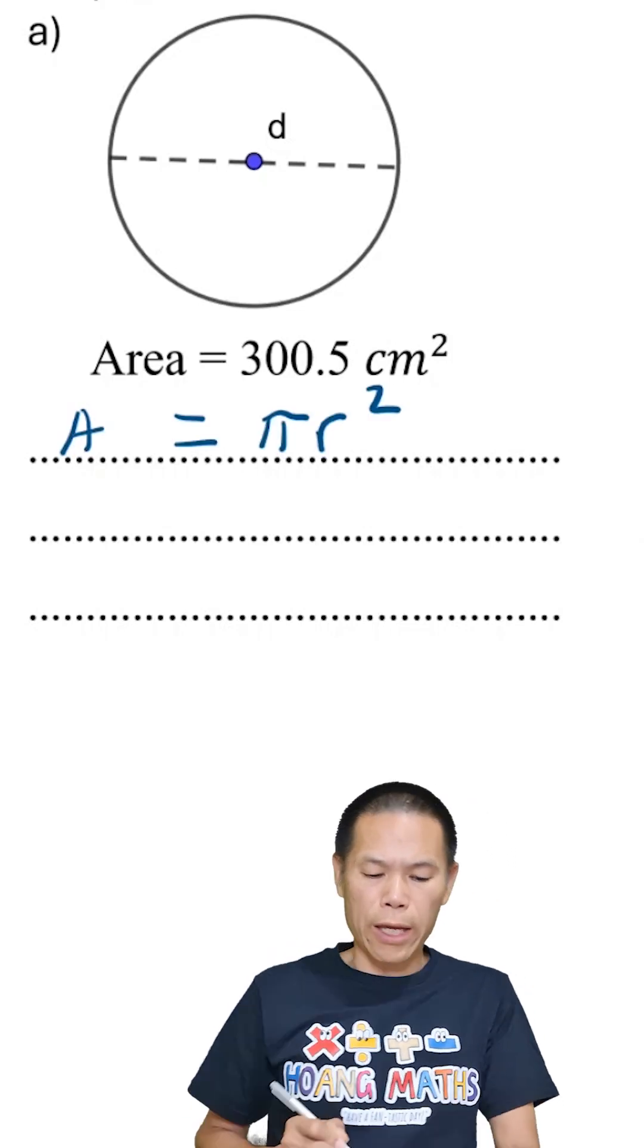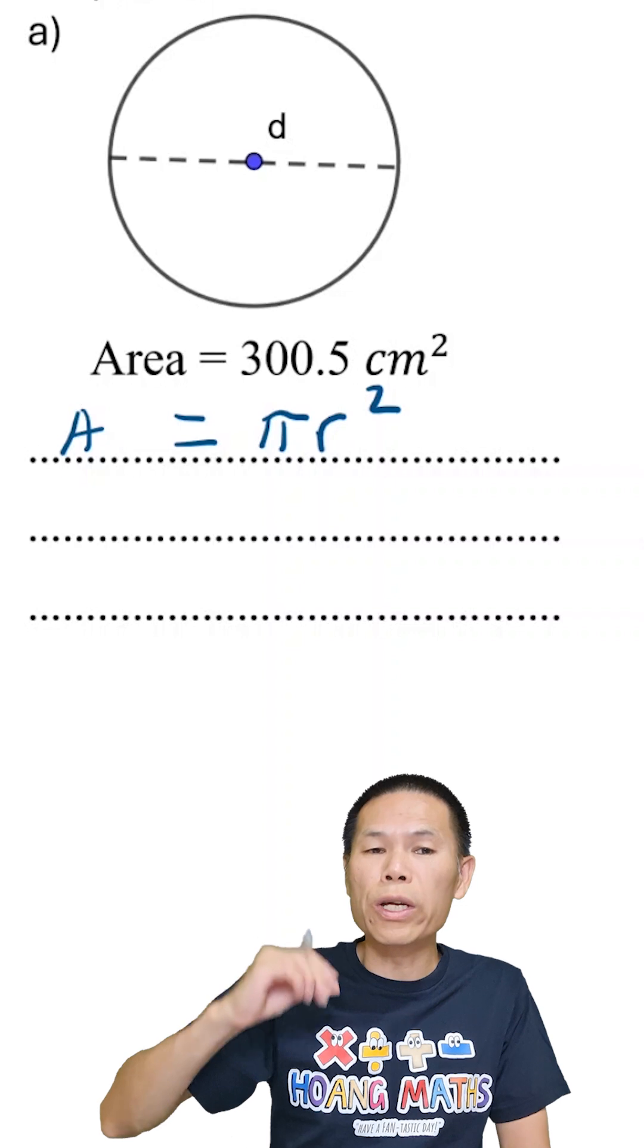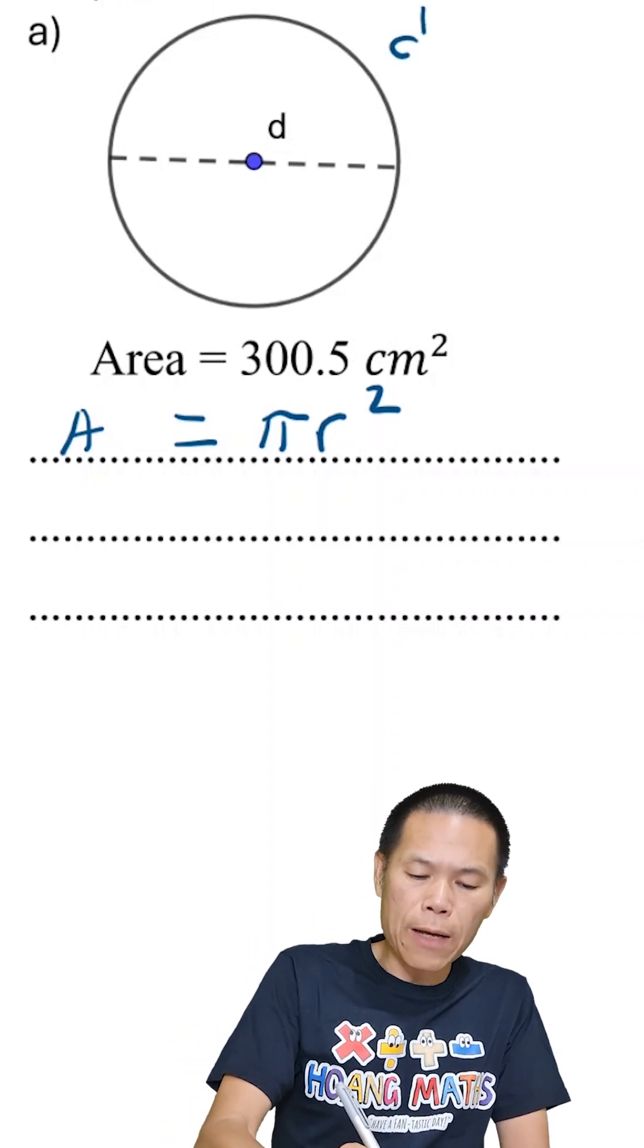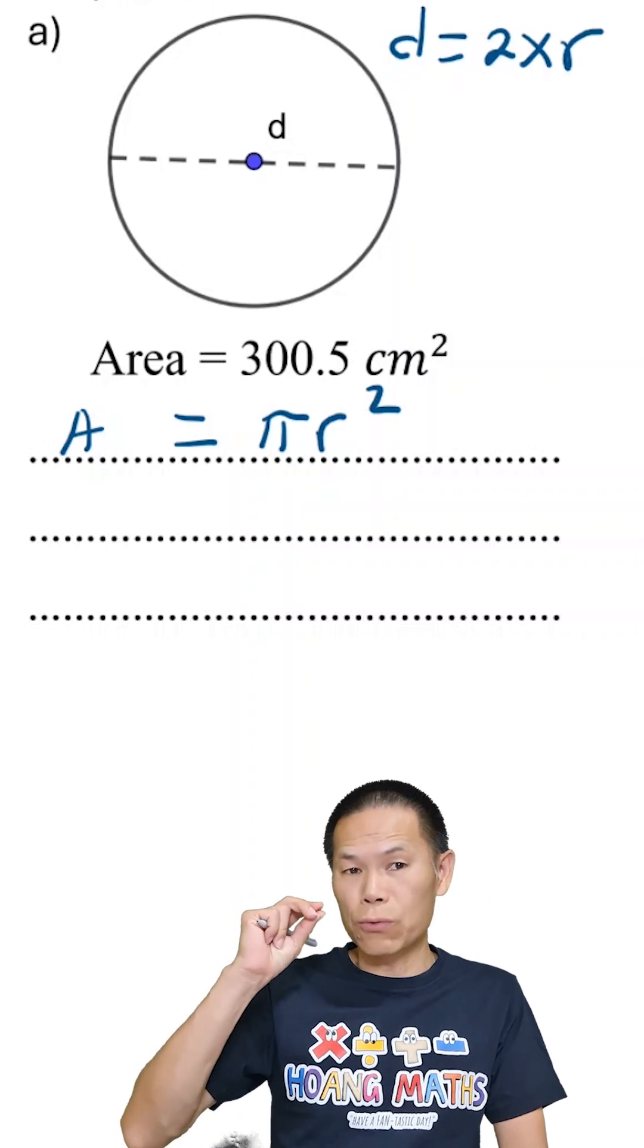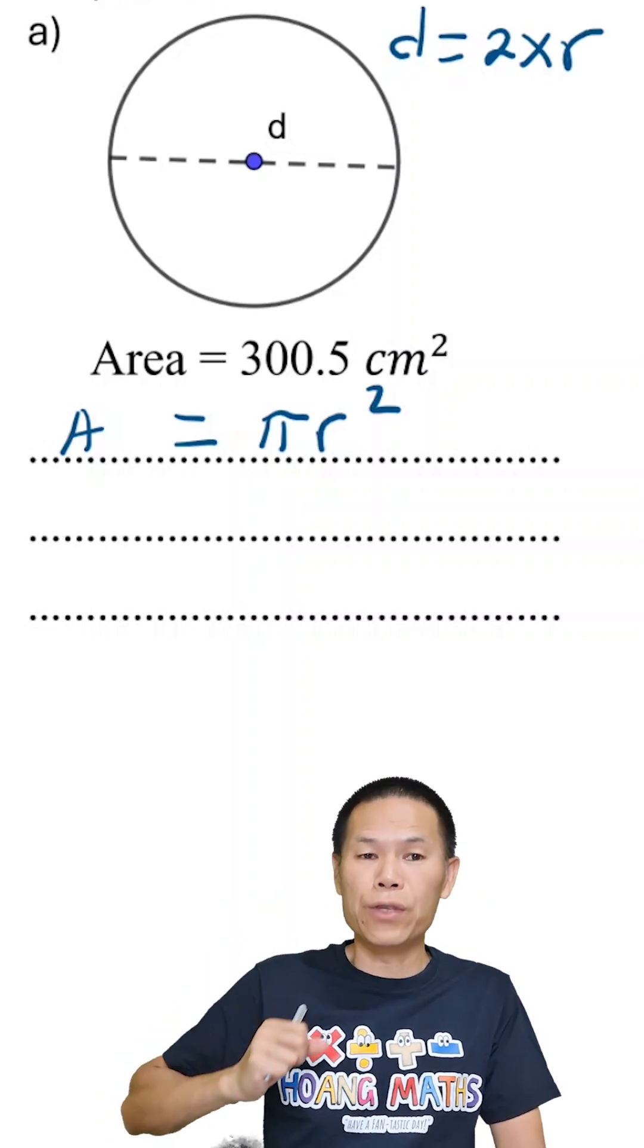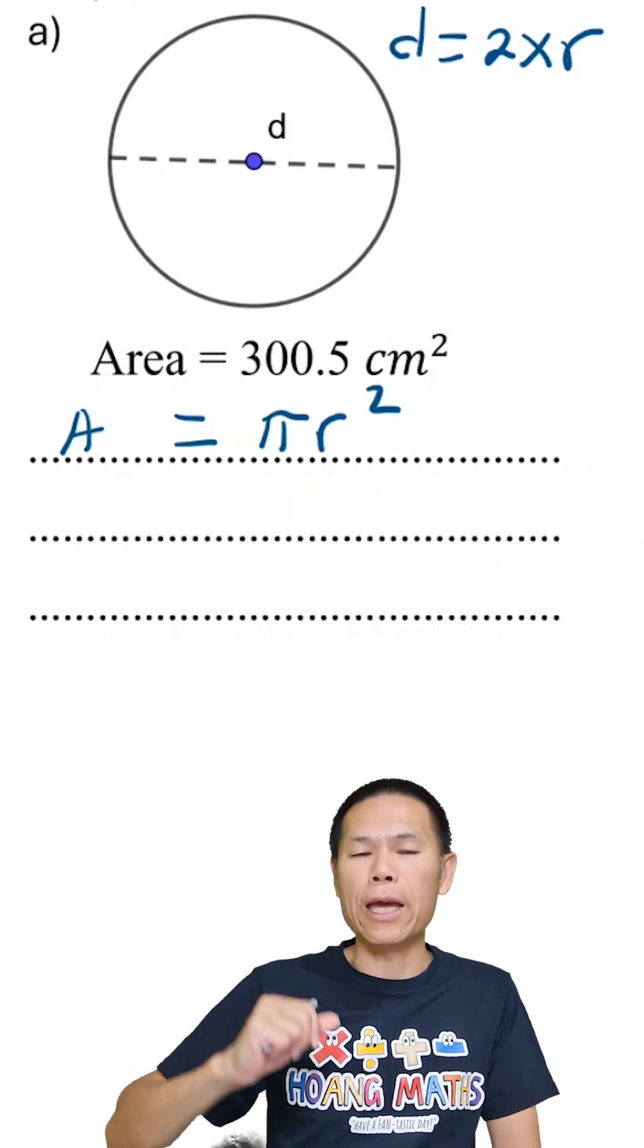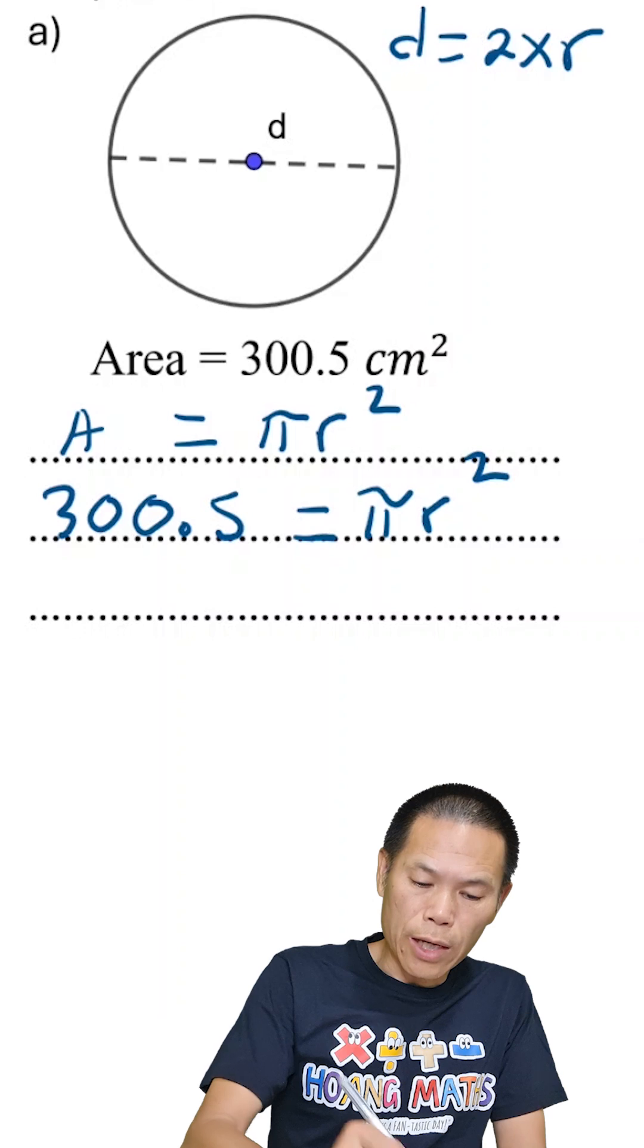The area of a circle is πr². We need to work out r, then we times two will give us the diameter. Don't forget, diameter is two times the radius because the radius is half of the diameter. So we just need to work out the radius first, then we times two.